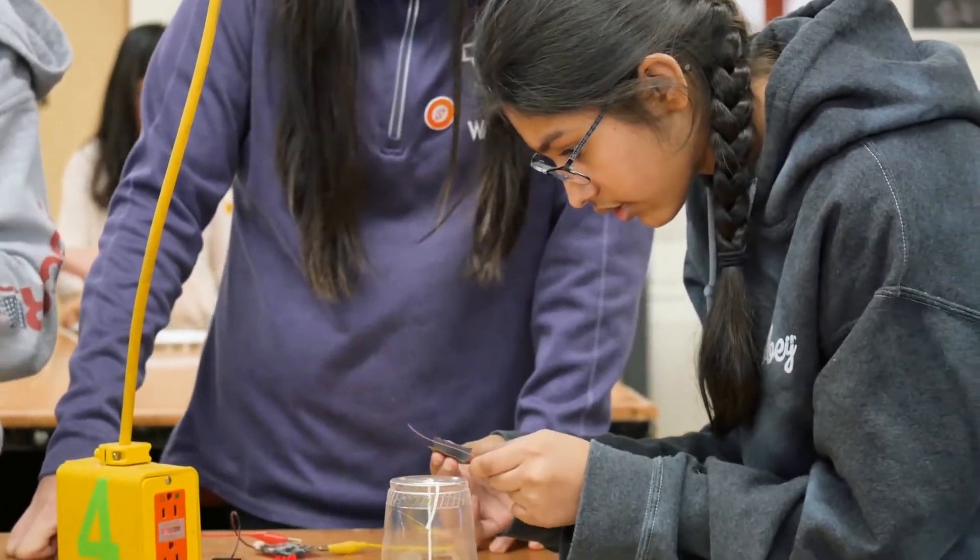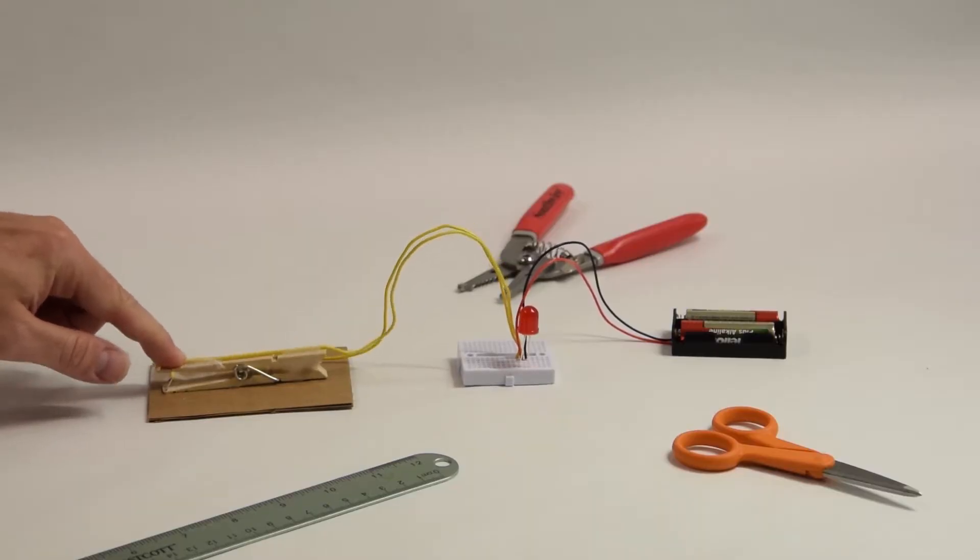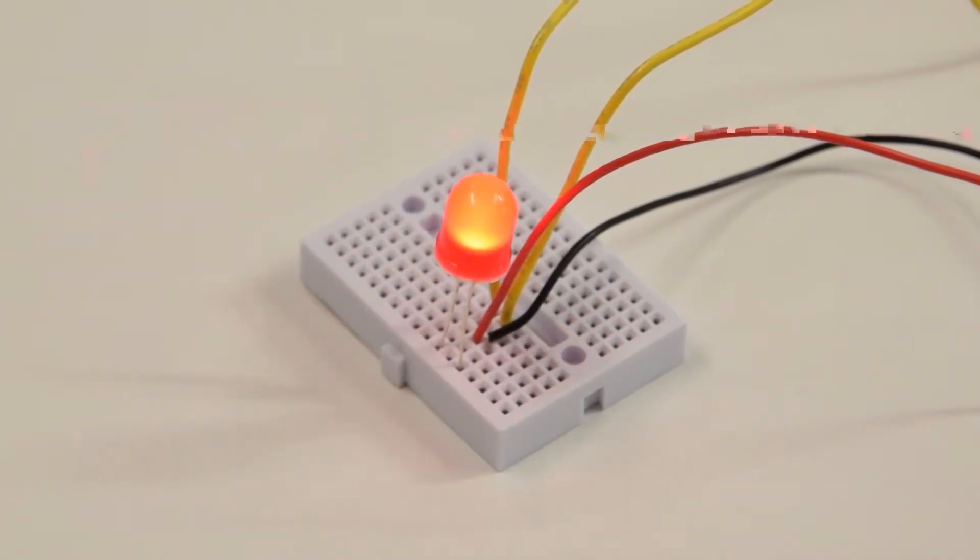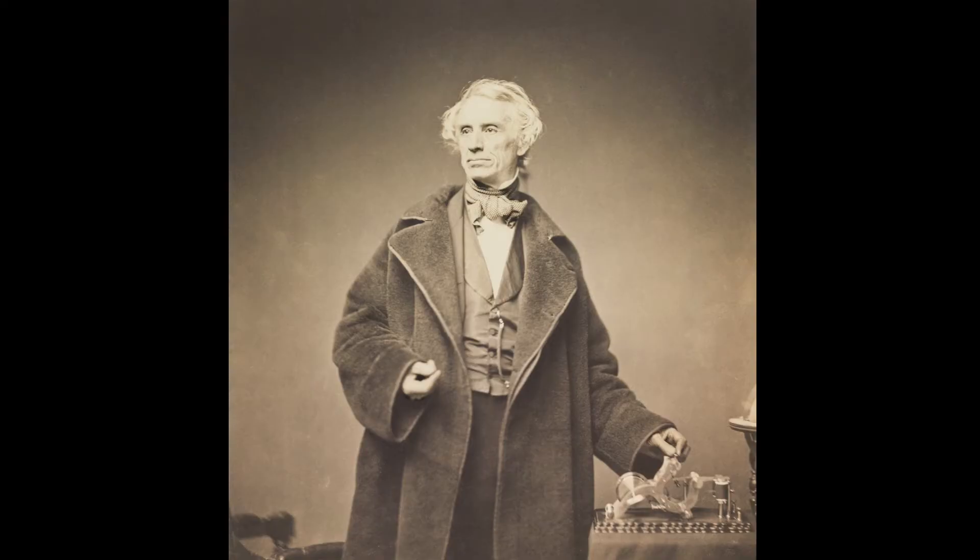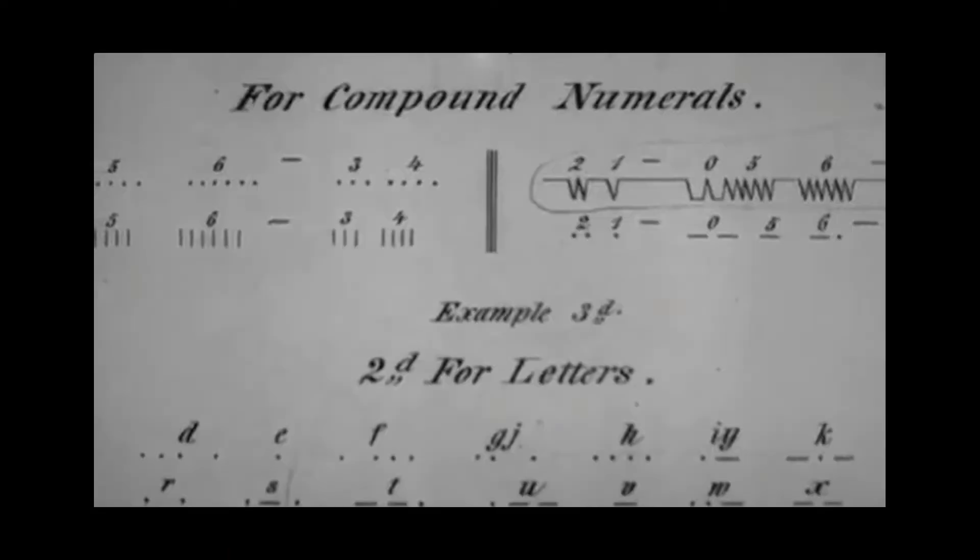The lesson plan begins with an introduction to electrical circuits. Students build an LED signal lamp and practice sending coded characters using Samuel Morris' well-known 1844 technique, Morse code.